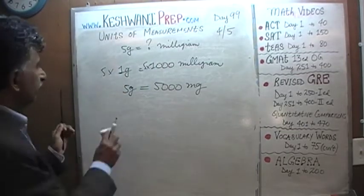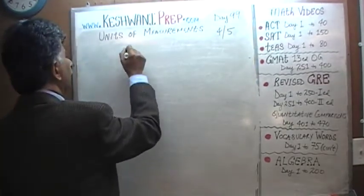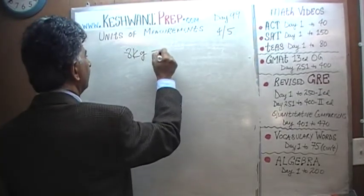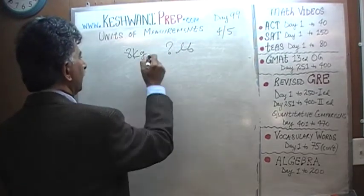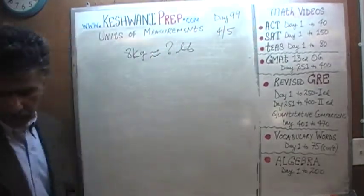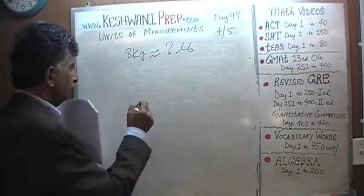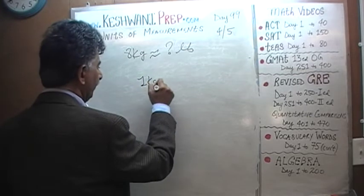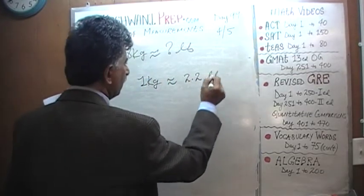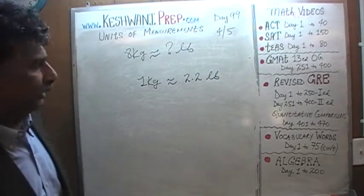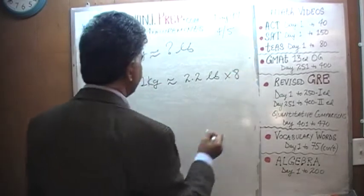The next one is asking us to convert: eight kilograms equals approximately how many pounds? We are not looking for the precise answer. We know one kilogram equals about 2.2 pounds — this is something we have to know by heart. We don't have one kilogram, we have eight kilograms, so multiply both sides by eight.